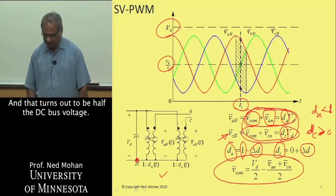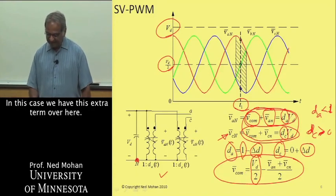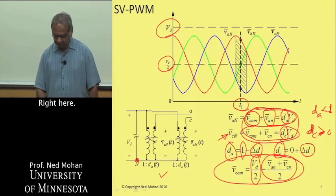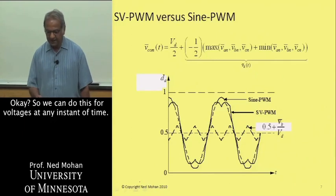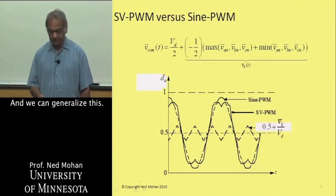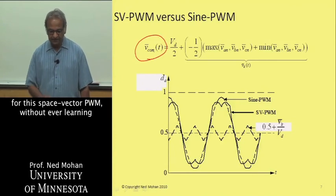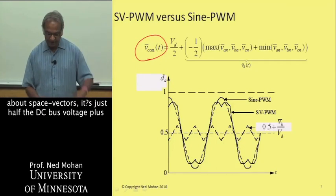That turns out to be half the DC bus voltage, and we would have used just this in sine PWM, but in this case we have this extra term over here. We can do this for voltages at any instant of time and generalize this. We can say that the common mode voltage that we will inject for this space vector PWM without ever learning about space vector is half the DC bus voltage plus this term V sub K.